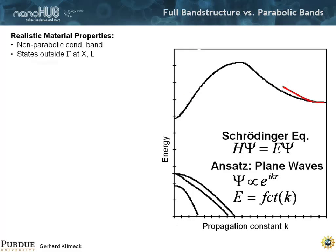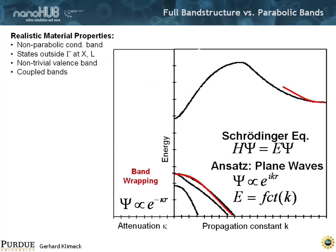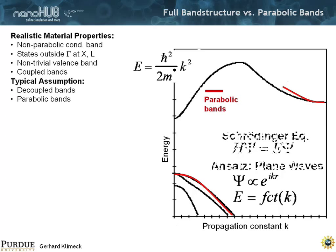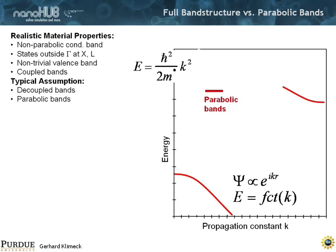What we typically do is we'll put a parabola right here. It's pretty close to a parabola. And maybe we'll put another parabola out at the x point, and maybe we'll put another parabola here at the gamma point for the holes. And then we kind of know that these bands talk to each other but we'll most of the time sort of forget about that.